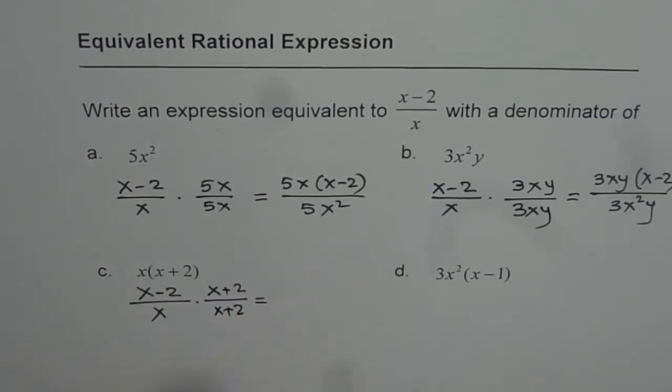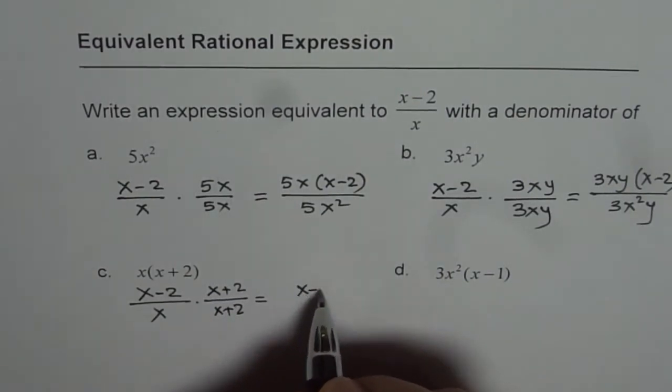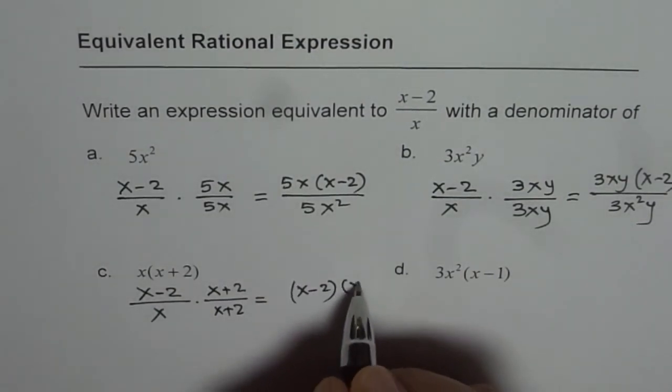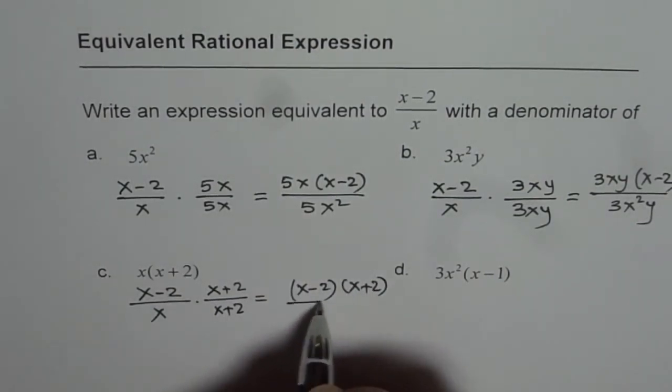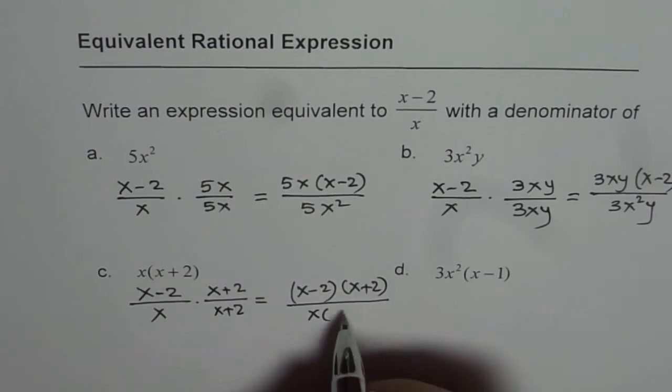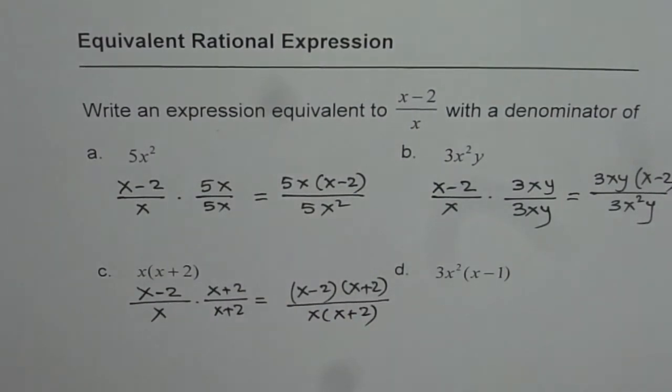Thereby, we'll get the required result, which is x minus 2 times x plus 2 divided by x times x plus 2. You got it.